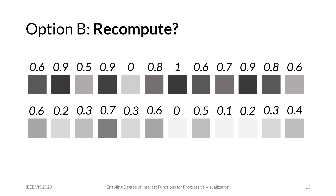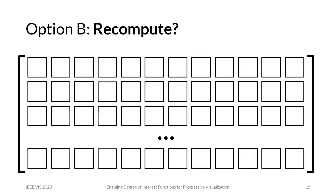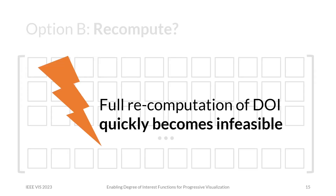On the other hand, if we compute the Degree of Interest Function over all visualized data, recomputing every time we get a new chunk, we get consistent interest values. However, in progressive visualization we're dealing with big datasets, and eventually those become too big to recompute the DOI function every single time the data changes. Data size is one of the main reasons for using progressive visualization in the first place, so full recomputation also quickly becomes infeasible.